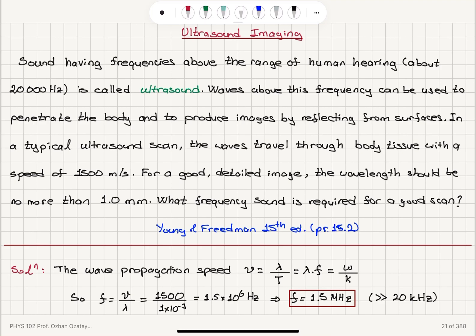And we are given the propagation speed of these waves in the human tissue. And the wavelength is to be no more than 1 millimeter. So, what is the requirement on the sound frequency? The propagation speed is lambda times the frequency.